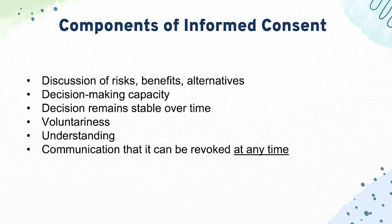The next part of informed consent is that the decision the patient gives remains stable over time. That shows that the patient isn't flip-flopping back and forth — they're confident about what they would want to do with their medical care. A question could ask: what should the physician do if the patient can't make a choice? The physician shouldn't move forward until the patient has reached a decision that remains stable over time.